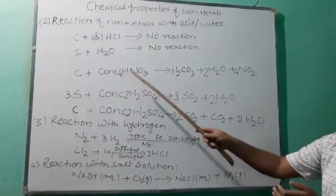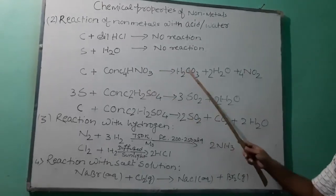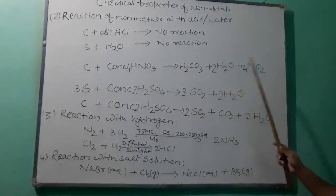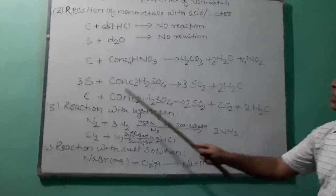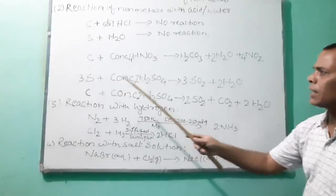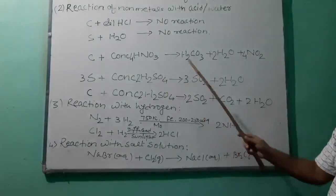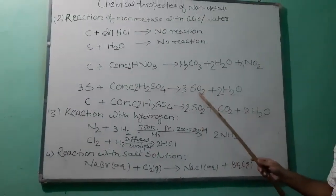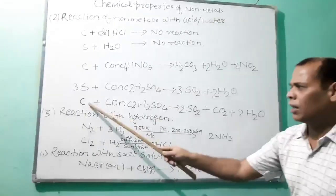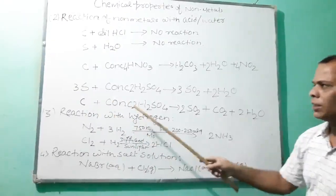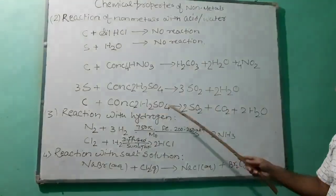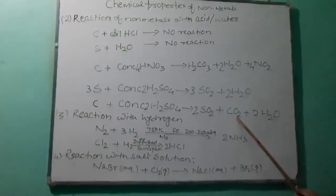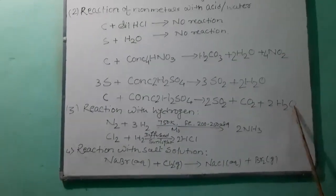Carbon reacts with concentrated nitric acid to form carbonic acid, water, and nitrogen dioxide. Sulfur reacts with concentrated sulfuric acid to form sulfur dioxide and water. Carbon reacts with concentrated sulfuric acid to form carbon dioxide and water.